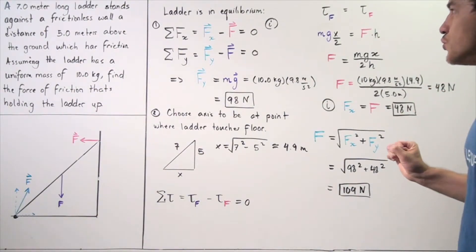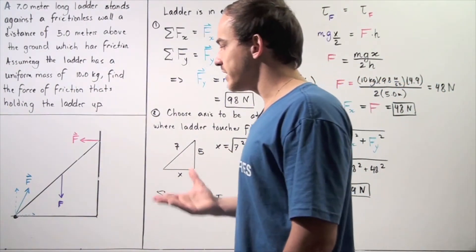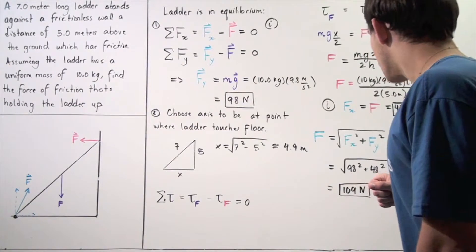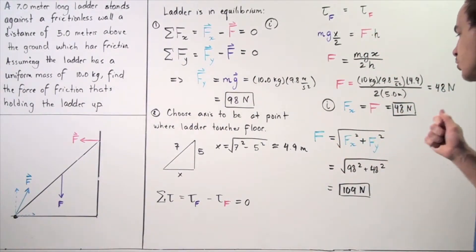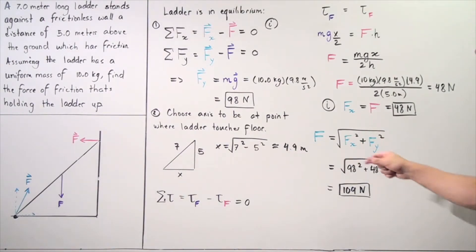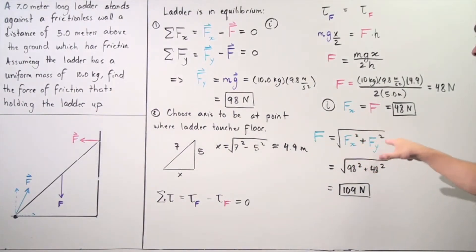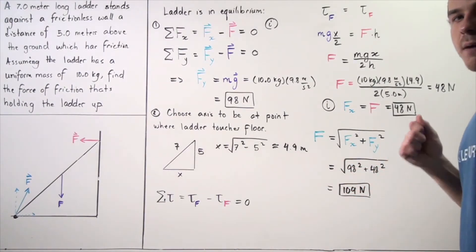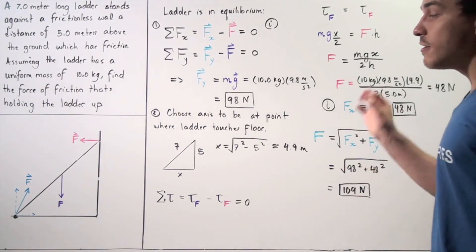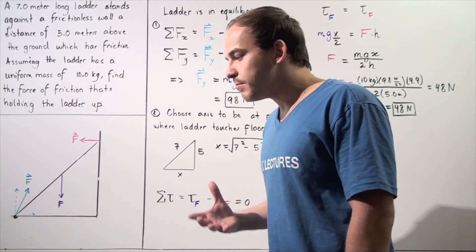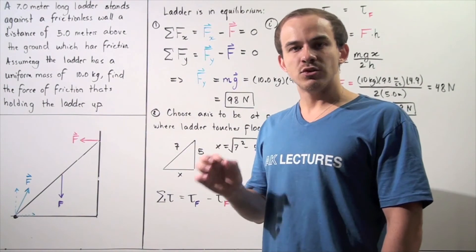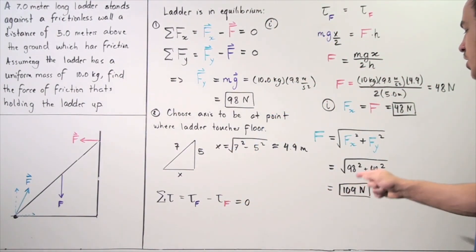Now we use the two component forces to calculate the total friction force magnitude. The force of friction equals √(fx² + fy²) = √(48² + 98²) = √(2304 + 9604) ≈ 109 newtons. So the force of friction created by the ground on the ladder — holding it in static equilibrium — is approximately 109 newtons.